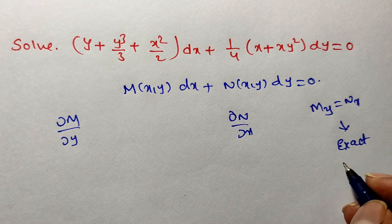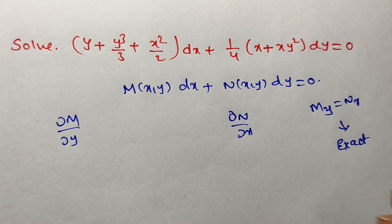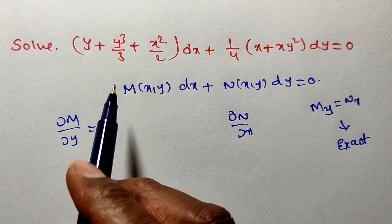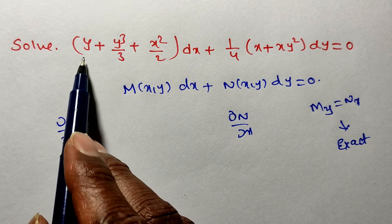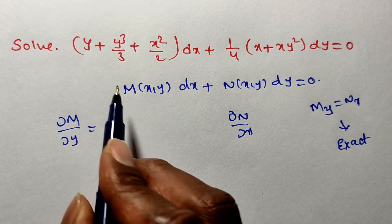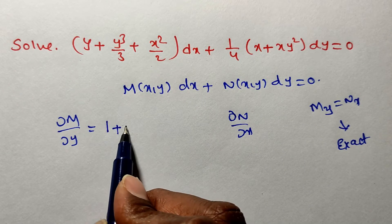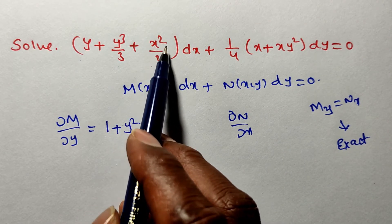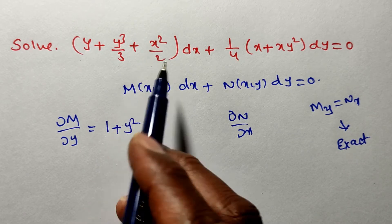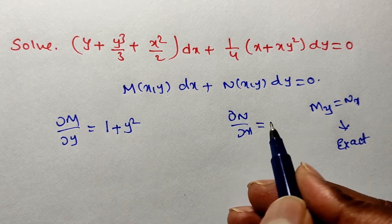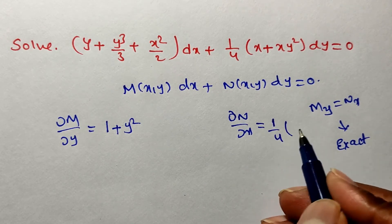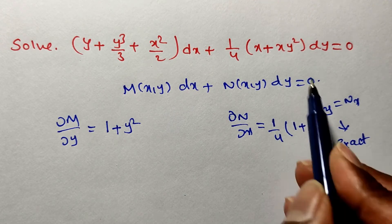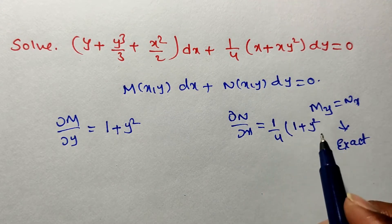If they are not equal, it is a non-exact differential equation. We are differentiating M partially with respect to y, treating all other variables as constants. The y derivative is 1; y³ derivative is 3y²/3, which gives y². The x²/2 term contains no y, so it is independent of y — its derivative is 0. Now for ∂N/∂x: 1/4 is a constant; x derivative with respect to x is 1; y² is independent of x, so x derivative is 1, giving y².